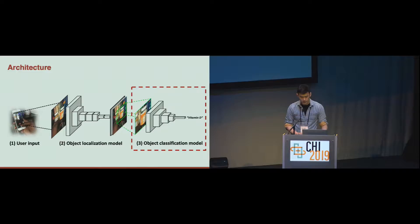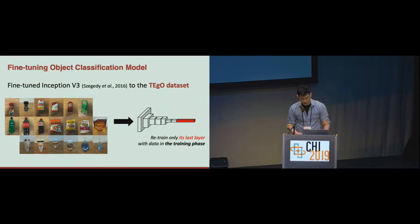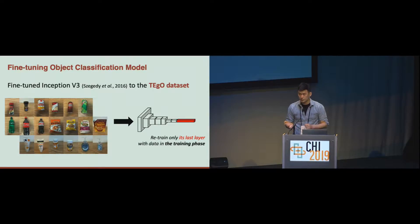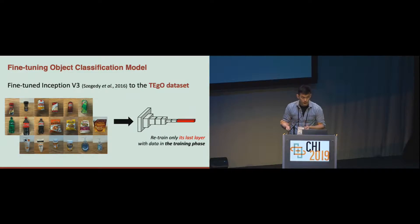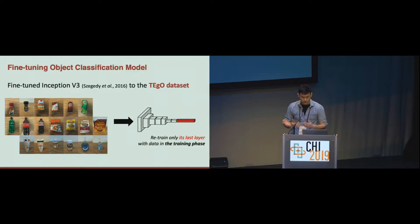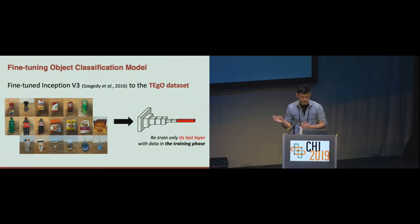Let's talk about the object classification model. We used Google's Inception version 3 model, which was pre-trained on a large-scale dataset — ImageNet — and then we fine-tuned this model to our own benchmark dataset by retraining only its last layer with the data from the training phase of our dataset. The reason we retrain only the last layer is to keep and exploit the features learned from the large-scale dataset.